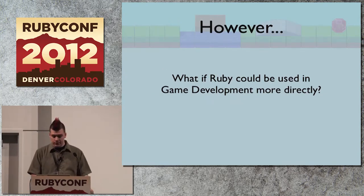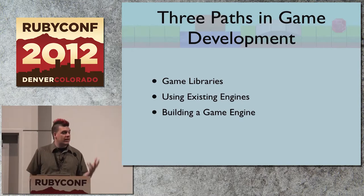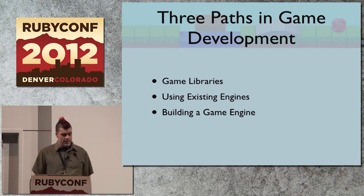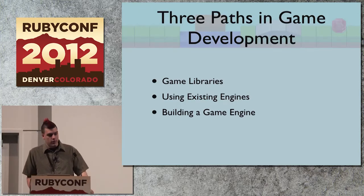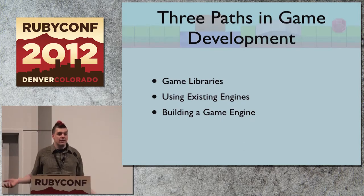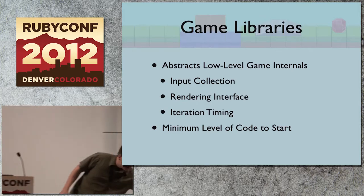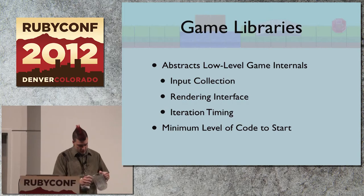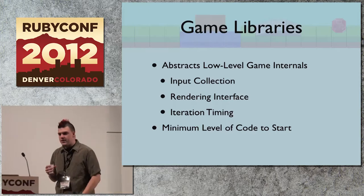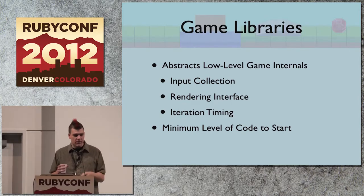But the reason I talk about all this is it got me thinking that Ruby is a really great language for things being used in the game industry, and there has to be some way to compose the great components of Ruby into game engines and games themselves. So I started looking into how we could solve this problem. There are really three paths in game development I want to talk about today. The first is using game libraries as a means of building games in Ruby — that's the intro that most people find if they're Googling game development in Ruby. The next is trying to use existing engines in a scripting fashion to inject Ruby in. And the third is just building an entire game engine using Ruby or with components of Ruby built in. Game libraries are designed to abstract low-level game internals — input collection, rendering, and iteration timing — so you don't have to know about starting an event loop or pulling in inputs. You just want to start making games.